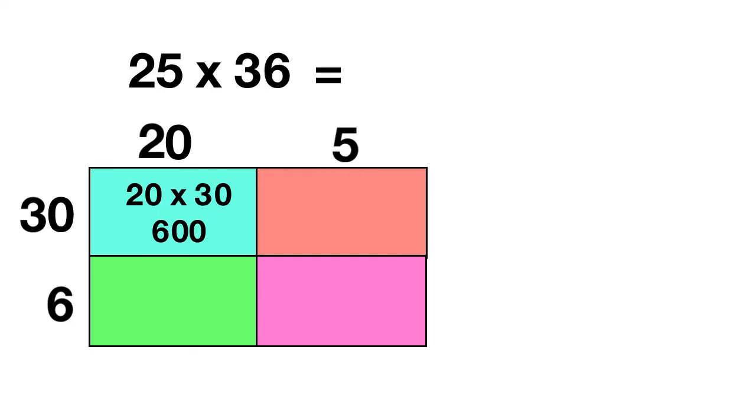Next, let's multiply 5 times 30 in this pink box. What does 5 times 30 equal? Well, 5 times 3 is 15, and you need to add 1 zero, so 150.